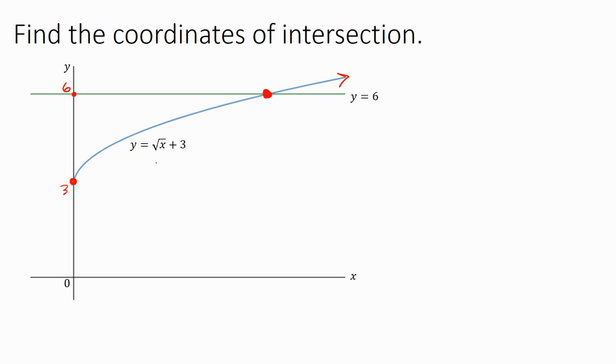We want to find that point right there where they intersect. And so the way we do that, if these are both equal to y, if y equals 6 and y equals square root of x plus 3, then that means that the right side must be equal. So I set the right side equal to each other.